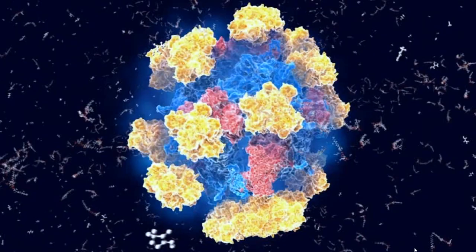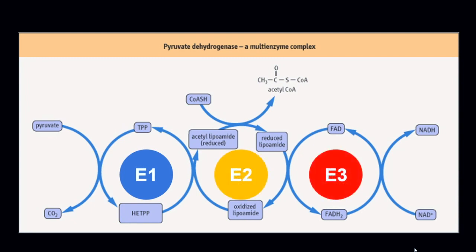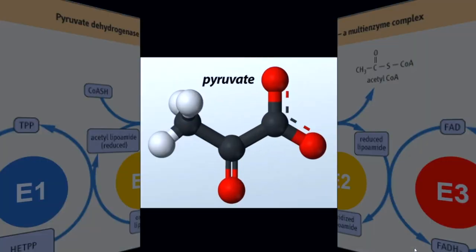There are three important enzymes that make up the PDC: pyruvate dehydrogenase, dihydrolipoyl transacetylase, and dihydrolipoyl dehydrogenase. But they're a mouthful, so we just call them E1, E2, and E3. Within each PDC molecule there are multiple copies of E1, E2, and E3, which is why it looks so complex.